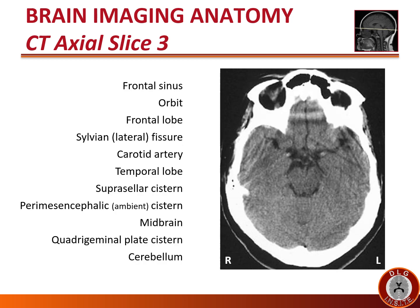We are now one slice higher up. See if you can identify the structures listed on this slide before proceeding. The frontal sinus is an air pocket within the frontal bone — thus it is black or hypodense on CT. At this level we see the orbit above the eye, and we are now able to see the frontal lobe in the anterior cranial fossa.